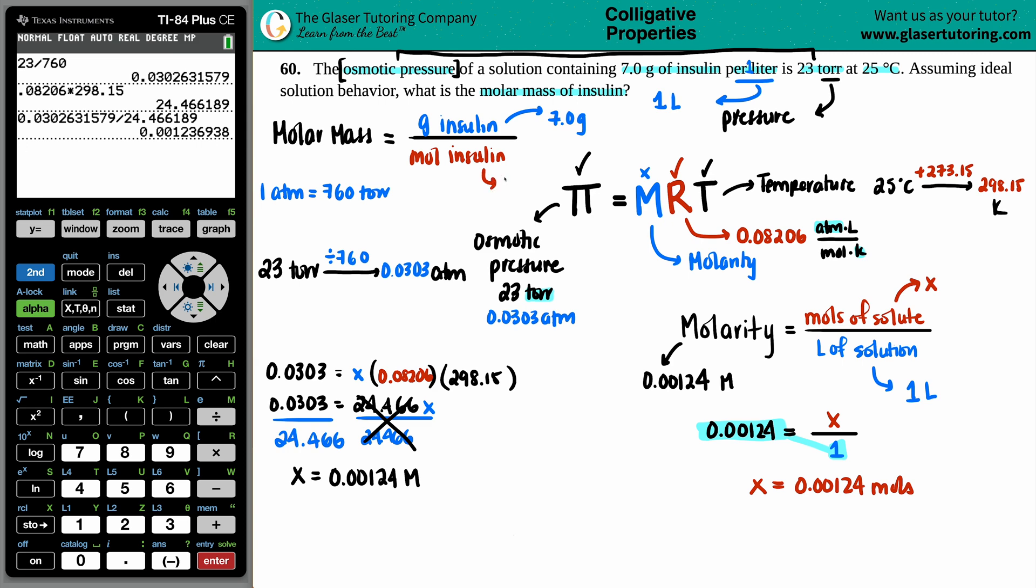Okay. 0.00124. So we can finally find out that molar mass. Molar mass equals the grams divided by the moles. The grams they told us in the beginning was the 7.0. And now we just found out the moles. 0.00124. We hypothesized that it was going to be a roughly big, big number. So let's see. When I say big, maybe like over a hundred.